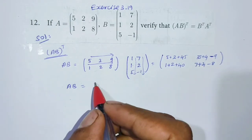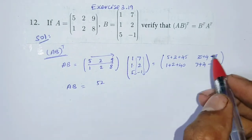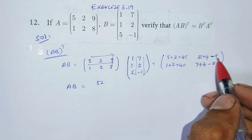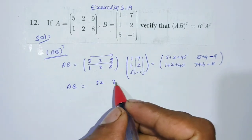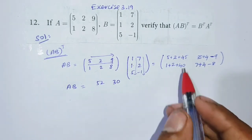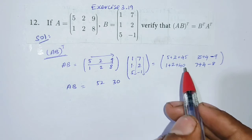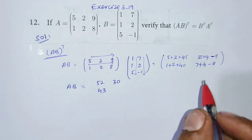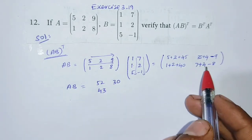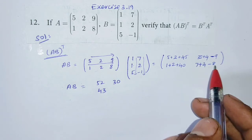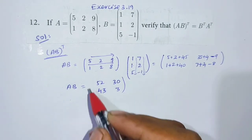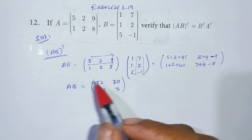Next: 35 plus 4 = 39; 39 minus 9 = 30. Okay. Next: 1 plus 2 = 3; 3 plus 40 = 43. Next one: 7 plus 4 = 11; 11 minus 8 = 3. Okay, so the product matrix AB is [52, 30; 43, 3].